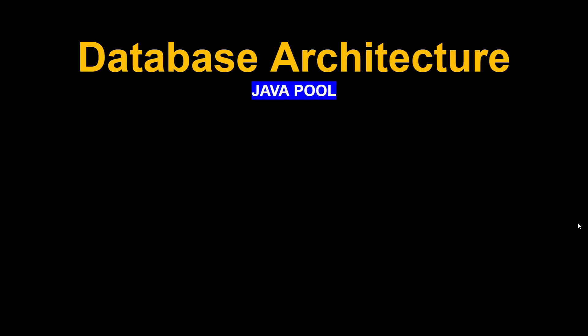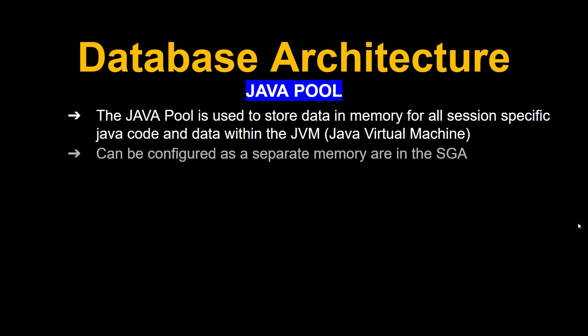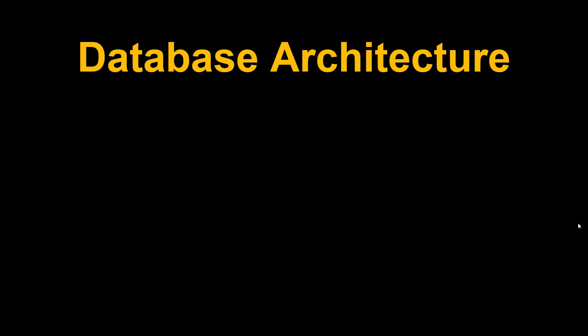Next is the Java Pool. The Java Pool is used to store data in memory for all session-specific Java code and data within the JVM. It can be configured as a separate memory area in the SGA and is sized by the java_pool_size parameter, which defines the size of the Java Pool.